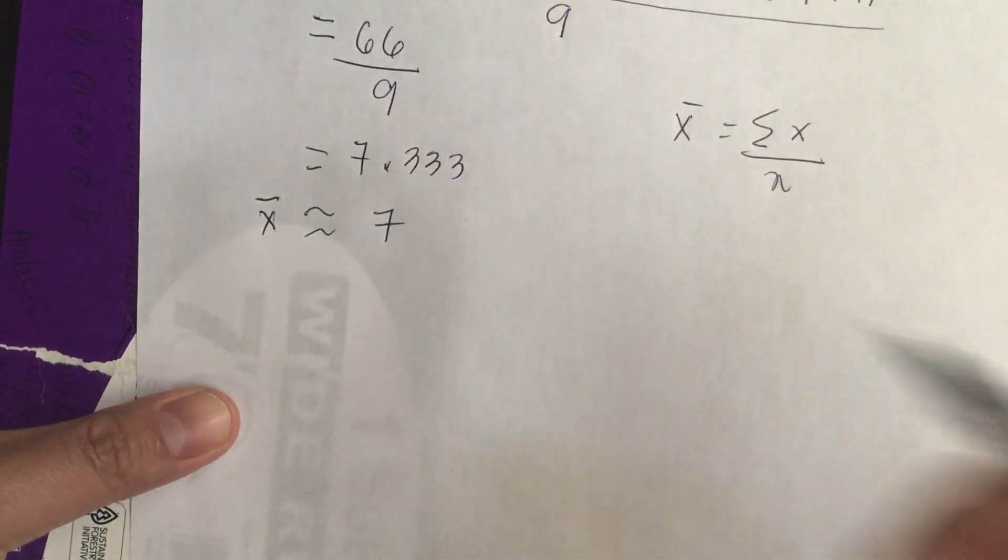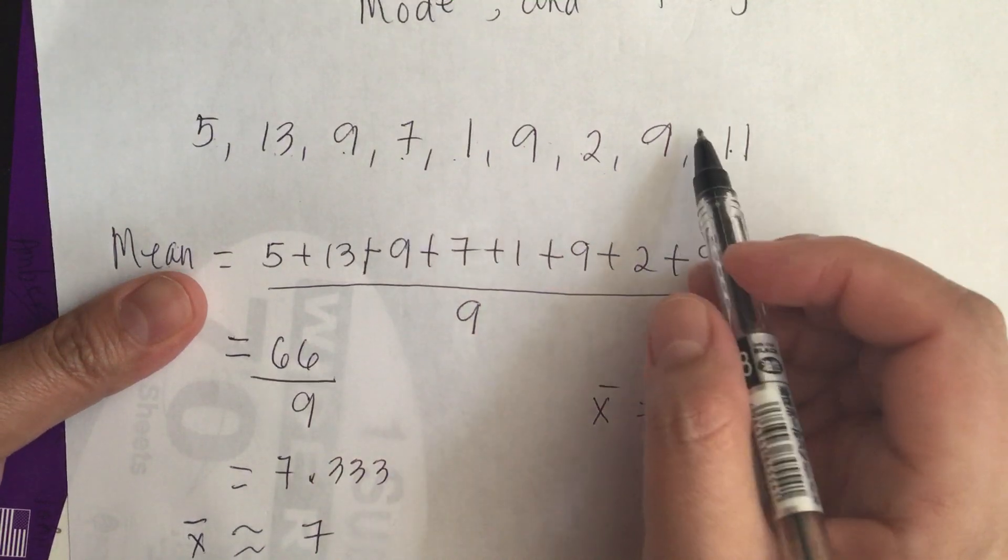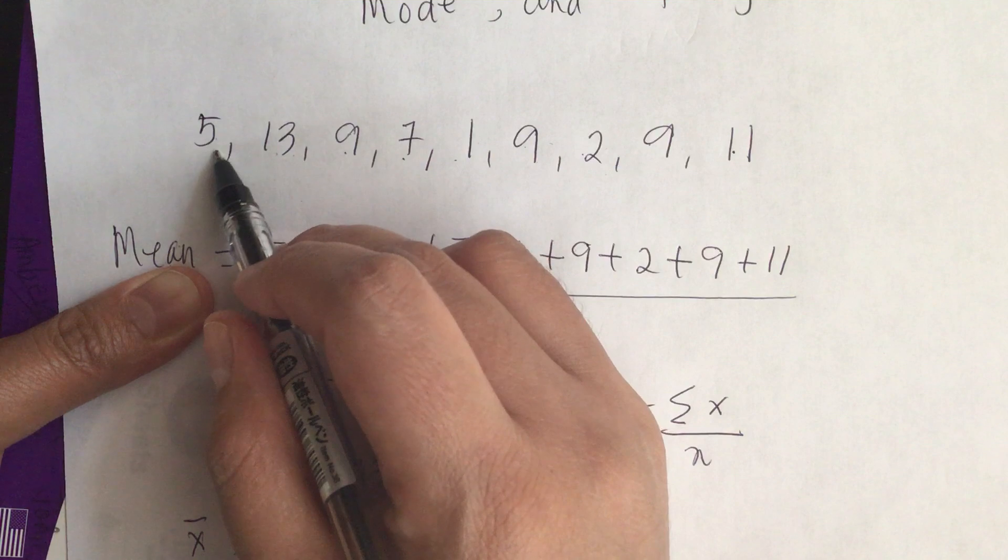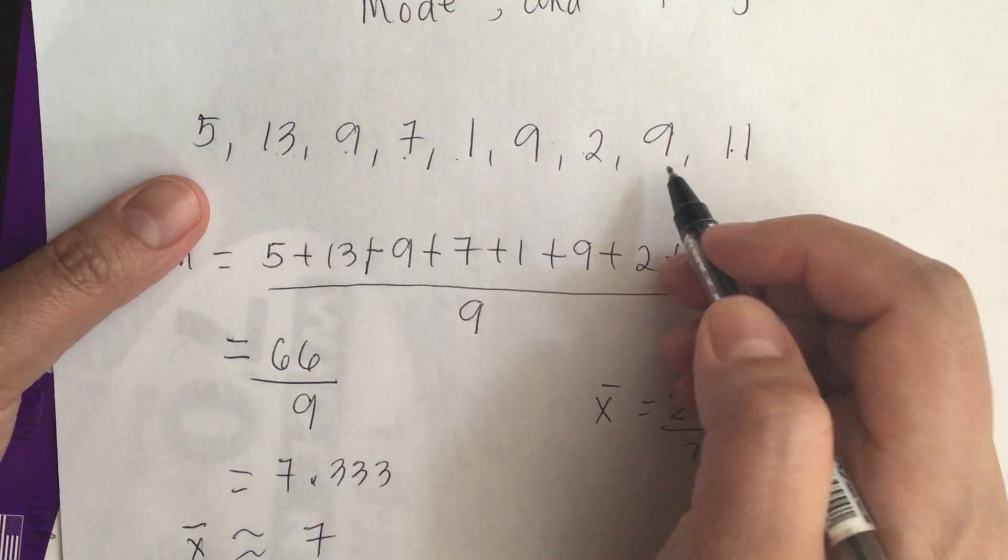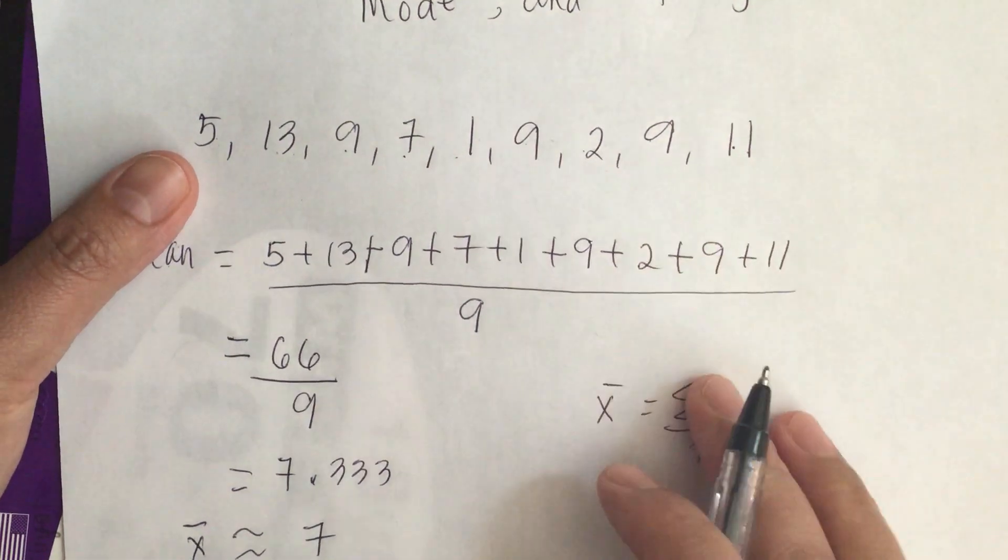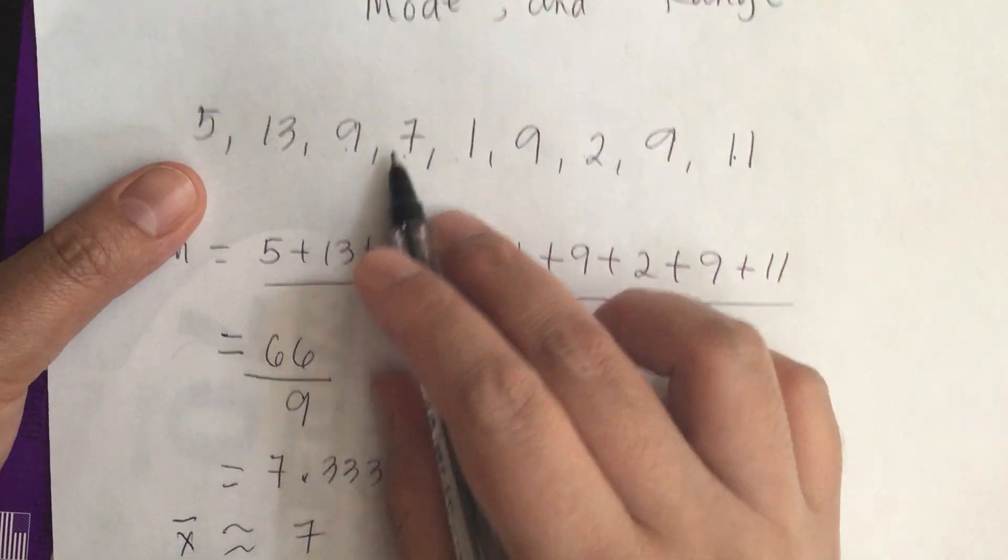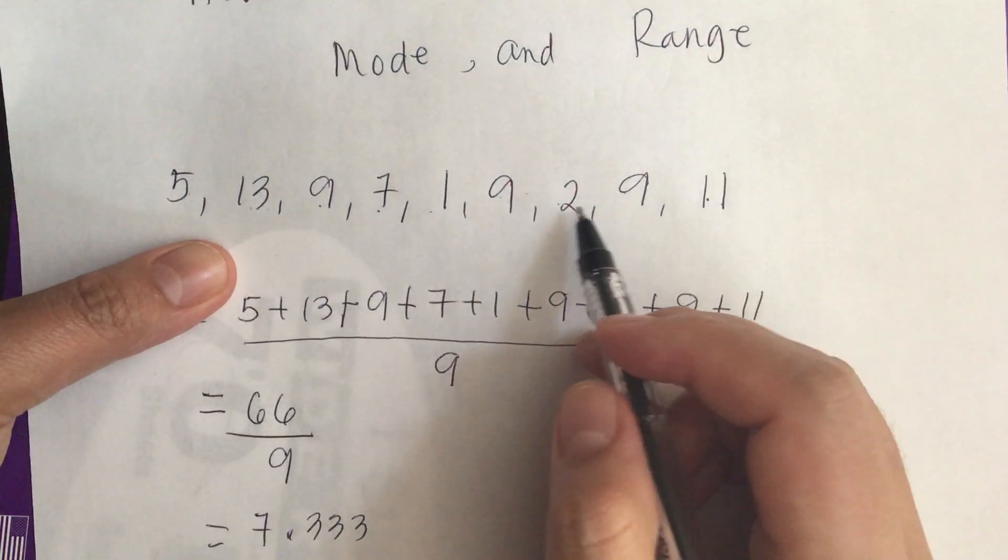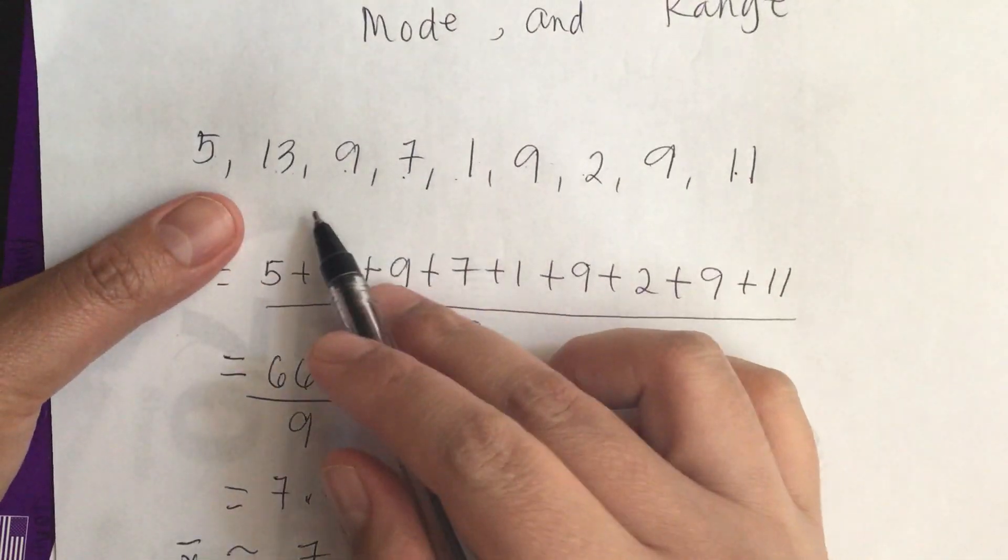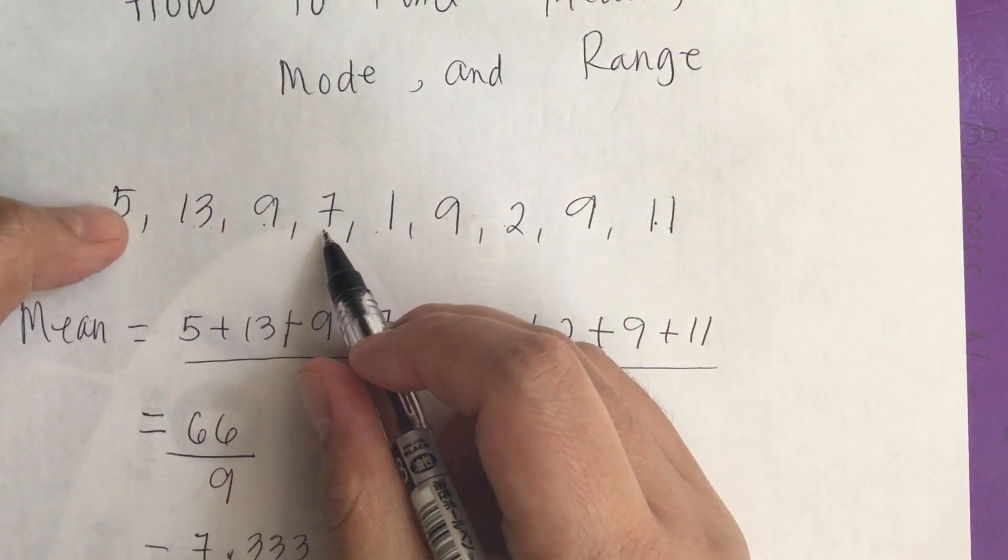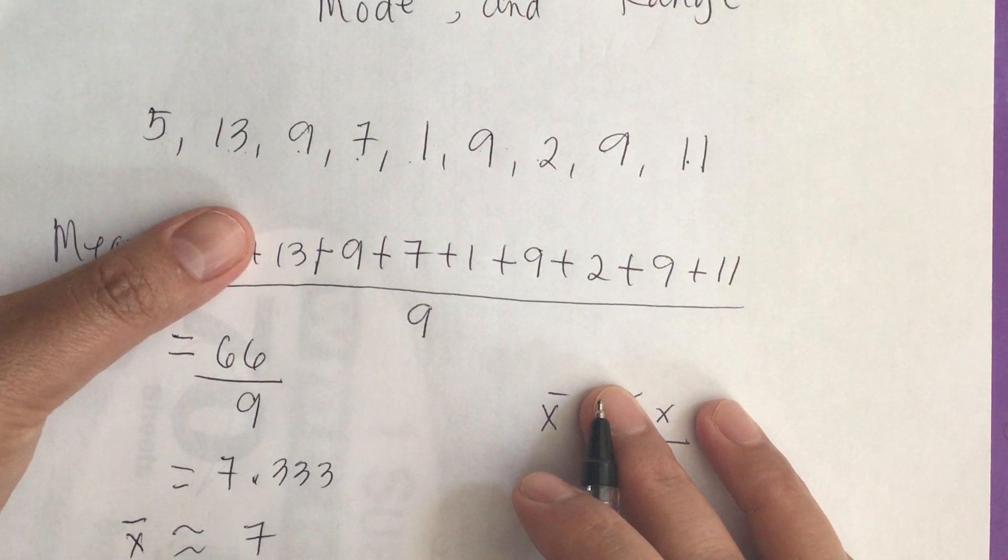Now we do the median. Median is equal to the number in the middle. But before we calculate the median, we have to rearrange the data set in ascending order. We have 11, then 3 nines. Oh no, 13 is the highest. We have 13, 11, 9, then 7, then 5, and then we have 2 and 1.